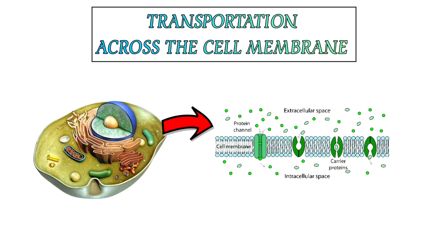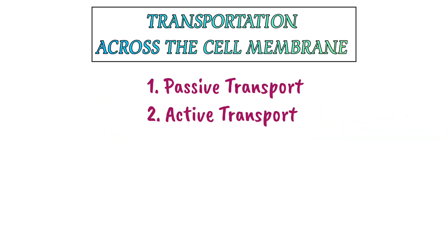A cell membrane allows nutrients, water, electrolytes, protein molecules, and some other substances to enter and go outside. So how does this transport across the cell membrane work? Transport across the cell membrane has two divisions: first, passive transport or diffusion; second, active transport.